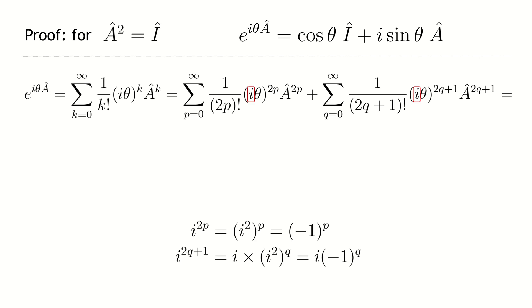Now, simplify the resulting expression by writing the complex i to even and odd powers. For the case of the even power, we get minus 1 to the power of p. And in the other, i multiplied by minus 1 to the power of q.